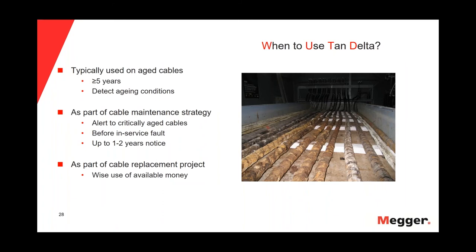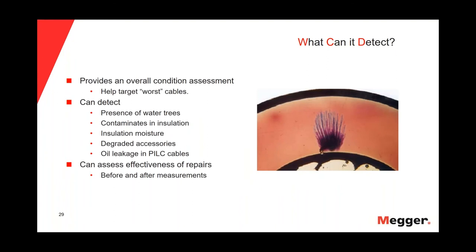When to use the tan delta? We use it typically on aged cables — at least cables that have been in service five or more years. The goal is to detect aging conditions in the insulation. We can use the tan delta as part of a cable maintenance strategy to alert critical aged cables before an in-service fault, providing up to one or two years' notice. We can also use it as part of a cable replacement project. What can we detect? The tan delta provides an overall condition assessment of the cable insulation — it helps us target the worst cables. We can detect the presence of water trees, contaminants in the insulation, insulation moisture, degraded accessories, and oil leakage in paper-insulated cables. We can also assess the effectiveness of repair.